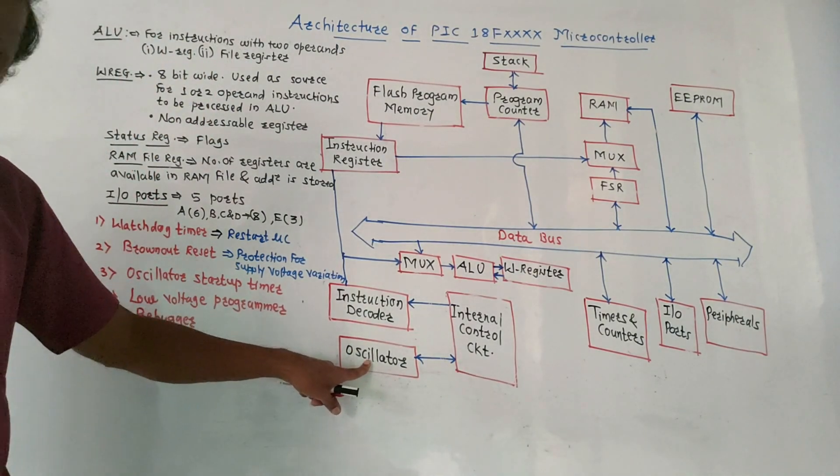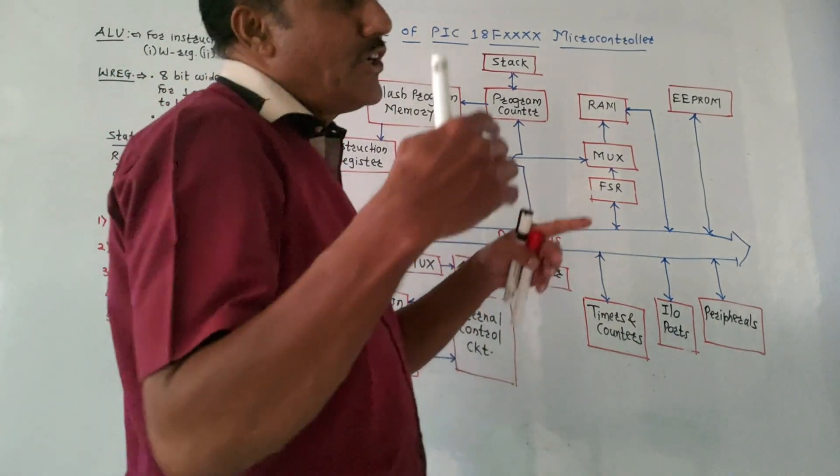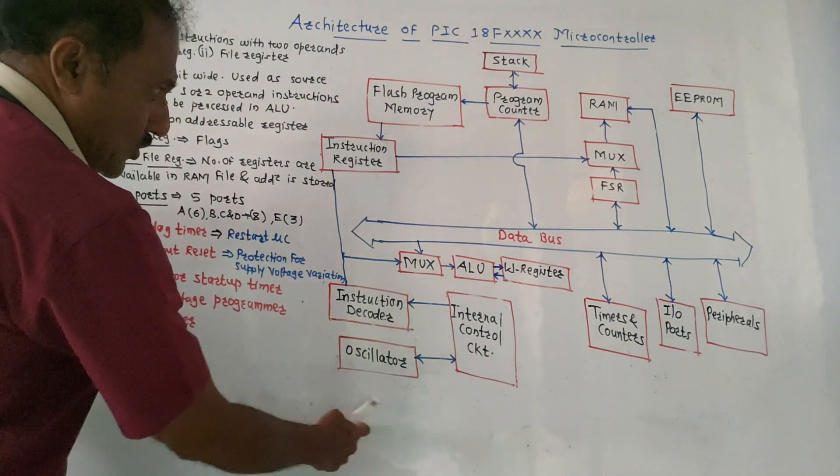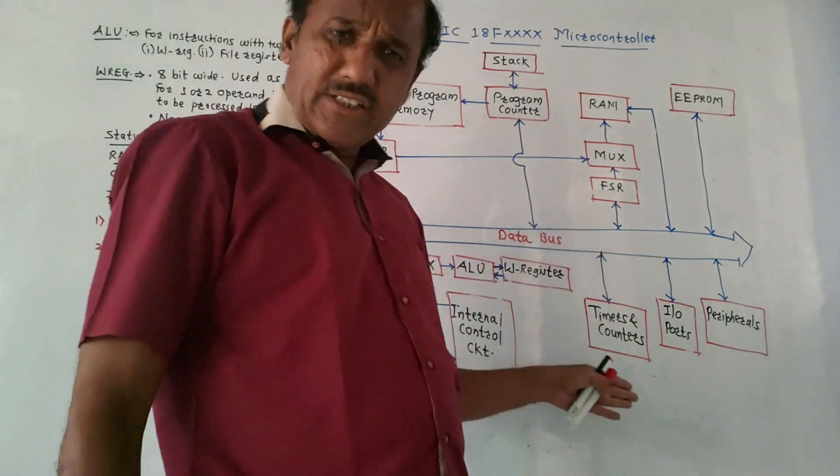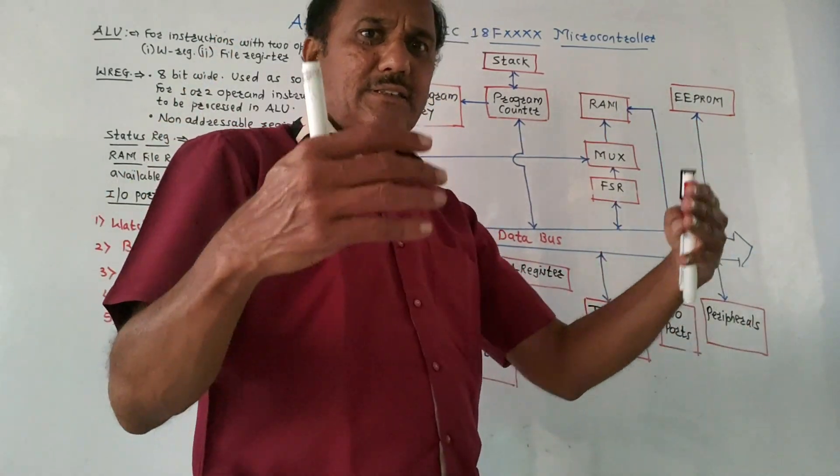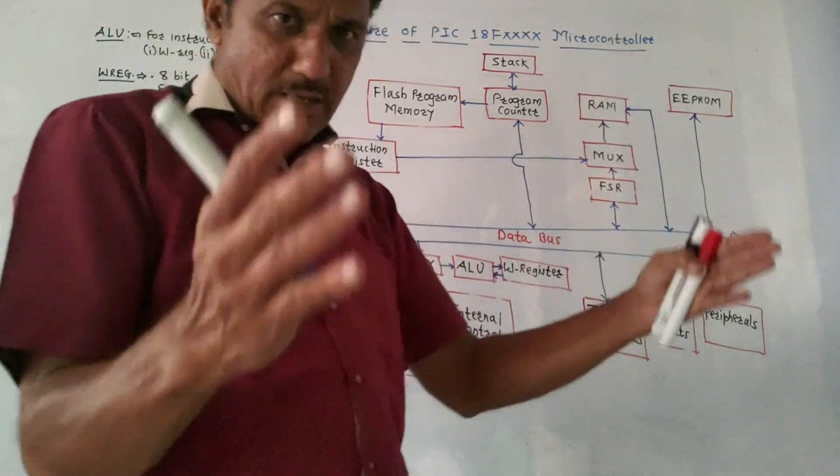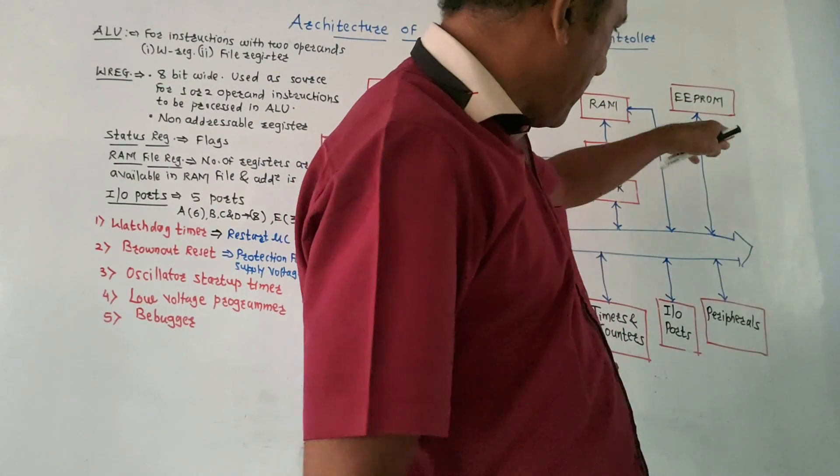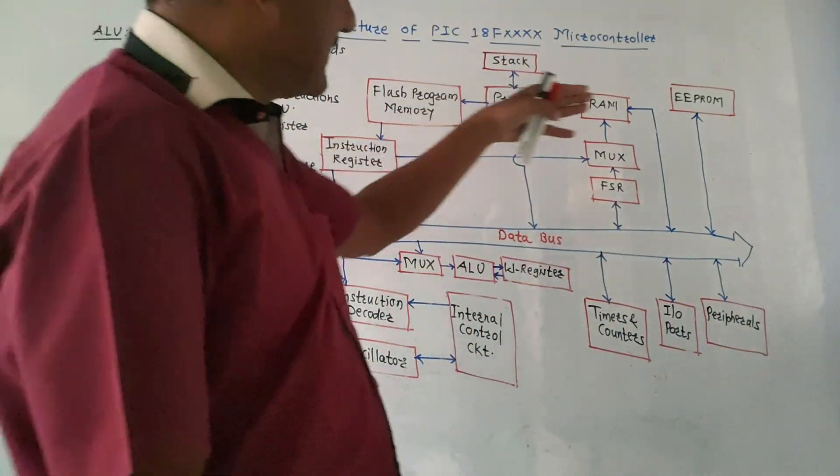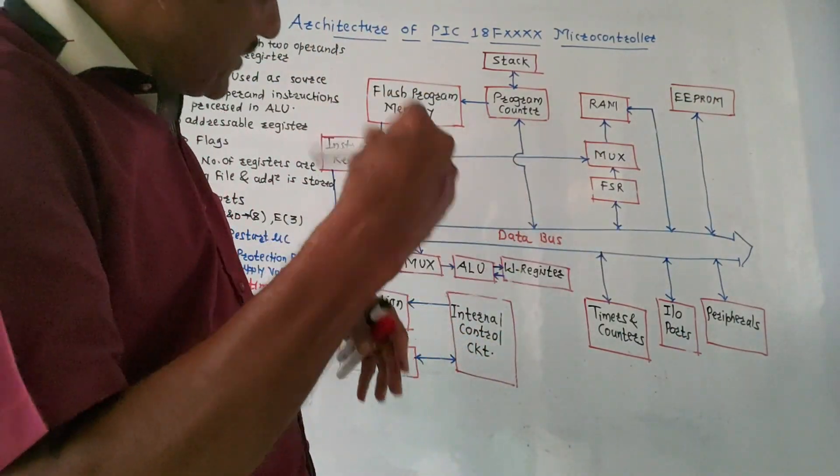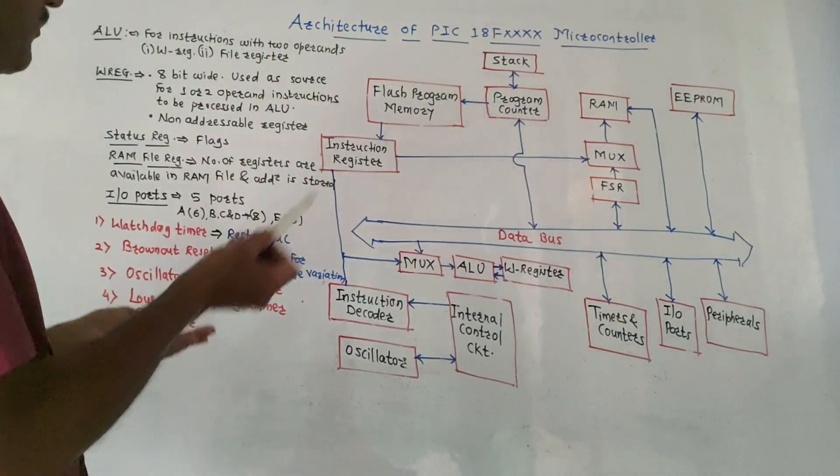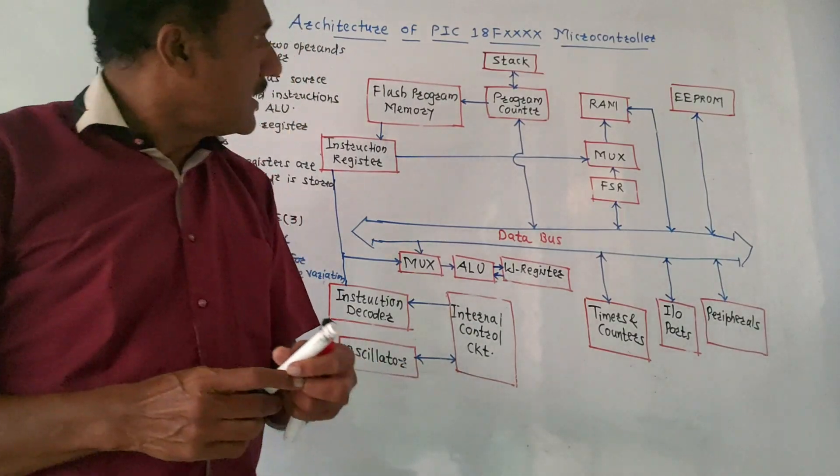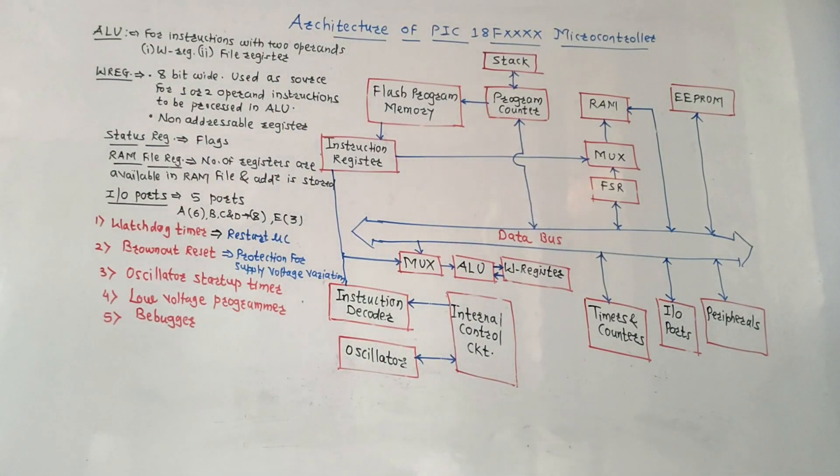Remaining blocks are very simple. Oscillator - we need to apply certain clock signals which will generate machine cycles. Then timers and counters to produce delay operations. In many applications, it is required to provide certain amount of delay. Peripherals - different peripherals can be connected. And EEPROM, which provides memory that can be used repeatedly. This is the generalized explanation of the architecture of PIC-18F-XXXX.